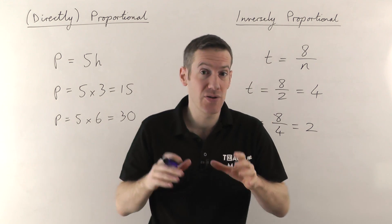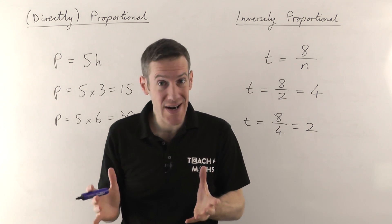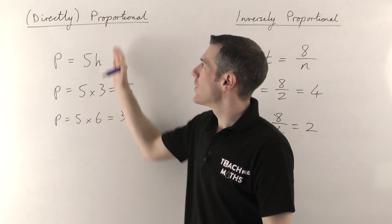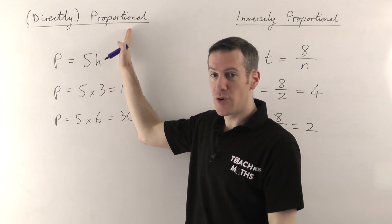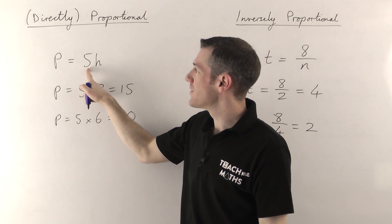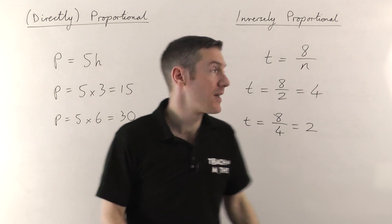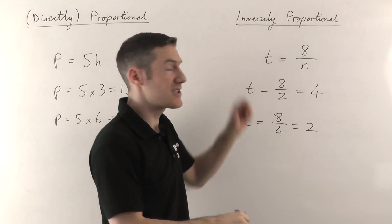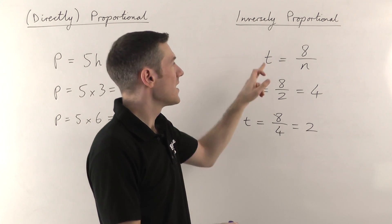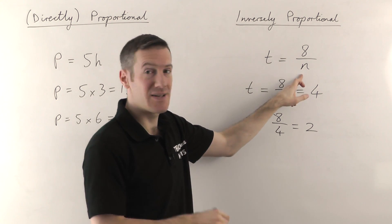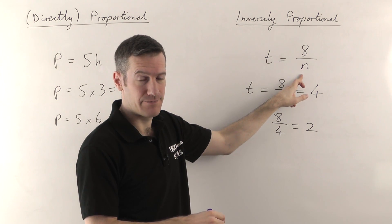It's important to connect the equations with the ideas. If two things are proportional, it means one thing is some number times the other thing. If they're inversely proportional, it means one thing is a number divided by the other thing.